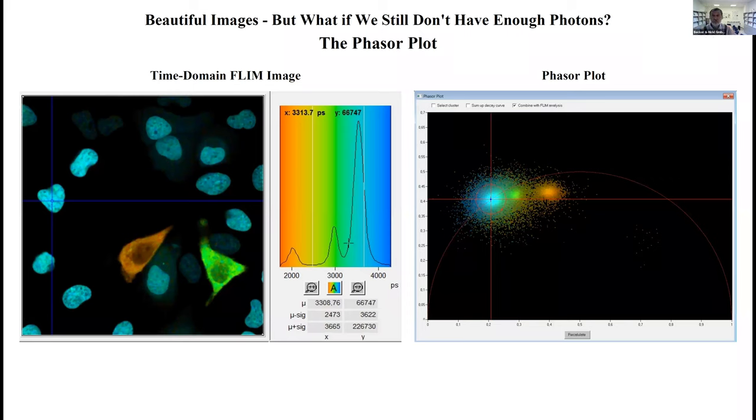Wonderful images, but still it can happen that you don't have enough photons. So what can we do here? Use the phasor plot. This is actually the point where in our software the phasor plot kicks in. What is the phasor plot? You take the decay functions of the individual pixels in the time domain image and Fourier transform them.